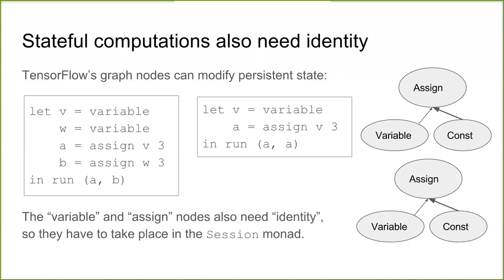TensorFlow doesn't just have randomness — it has state that can persist within and change within an operation, and persist between operations. There's a `variable` operation which creates mutable state, and `assign` which assigns a value to a variable. If you create two variables and assign them naively as pure expressions, the compiler could optimize them into a single variable, which is not what you want. So variable and assign operations must take place in the session monad.